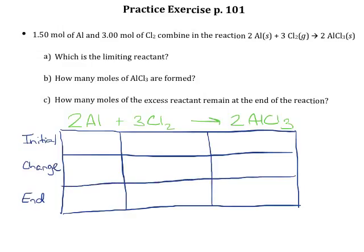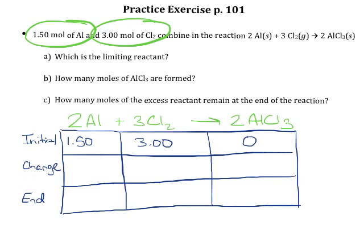What's very important when you do these ICE tables is that you can only put mole information into them. In this case, that's fine because they give us everything in moles, but if we ever have gram information, we would need to change the grams into moles. Okay, so let's go ahead and put in the information that we know. We know that we are starting with 1.5 moles of aluminum. We know that we are starting with 3 moles of chlorine. Typically, we start with 0 moles of the products because that is what we are trying to make in this chemical reaction.